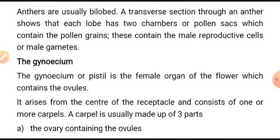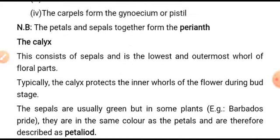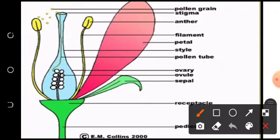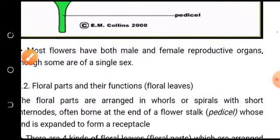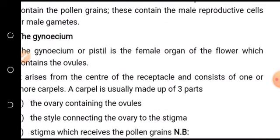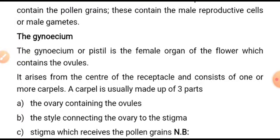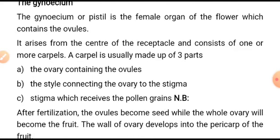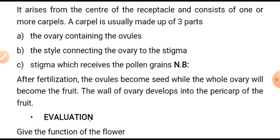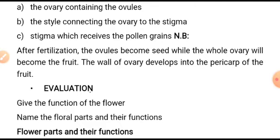The gynoecium or pistil is the female organ of the flower, which contains the ovules. It arises from the center of the receptacle and consists of one or more carpels. A carpel is usually made up of three parts: the ovary containing the ovules, the style connecting the ovary to the stigma, and the stigma which receives the pollen grains.